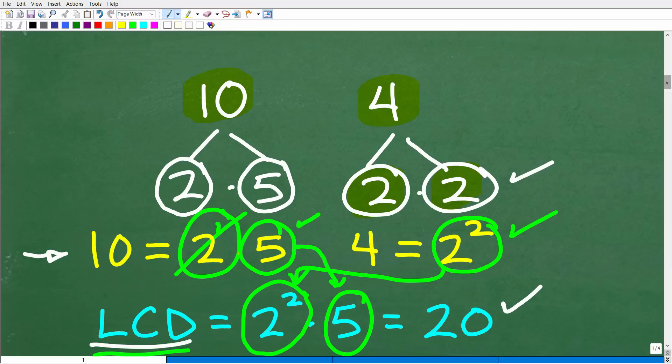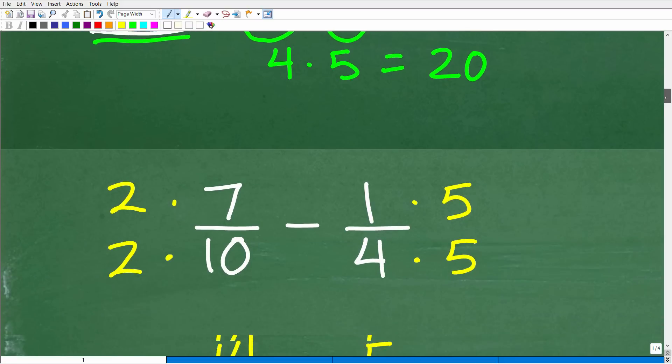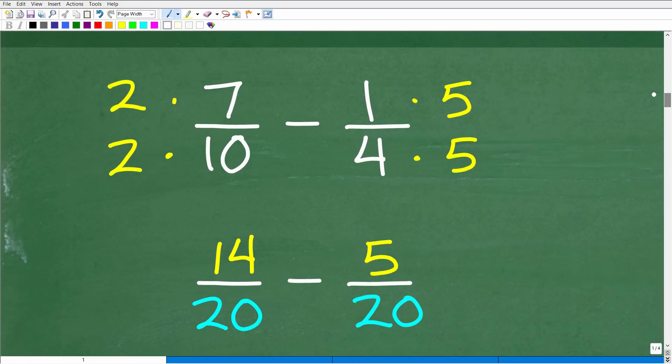So here it is: 20, that is our lowest common denominator. What does that mean? It means that we need to rewrite each of these fractions such that the denominator becomes 20. Instead of a 10 here, we need a 20. Instead of a 4 here, we need a 20.